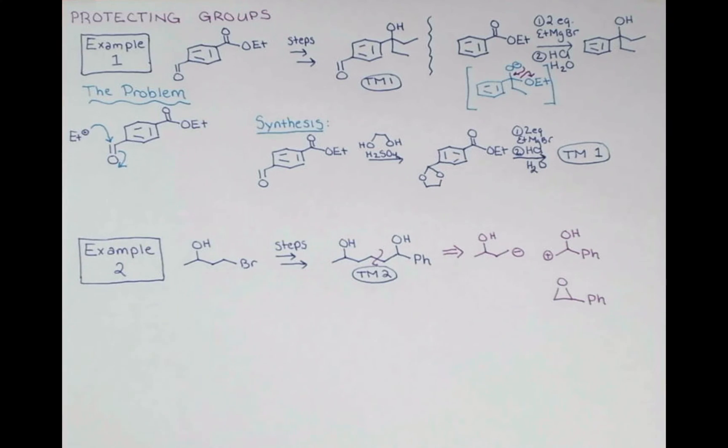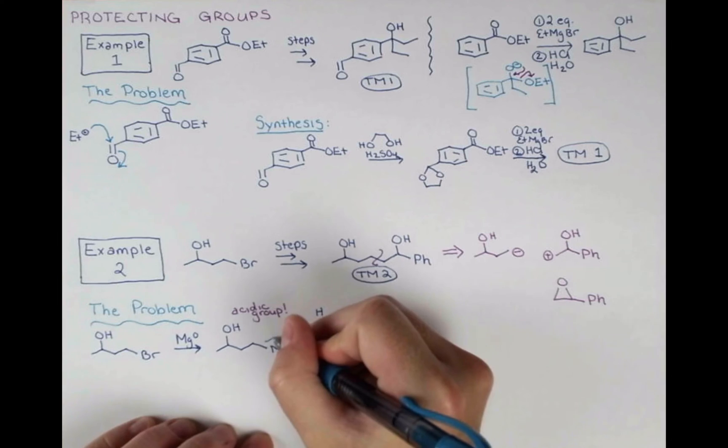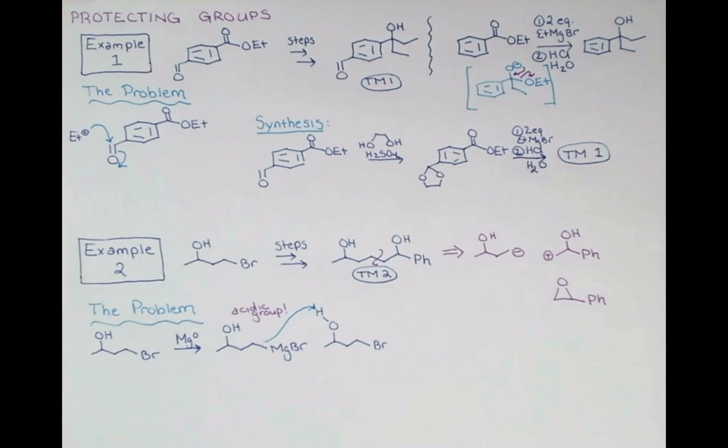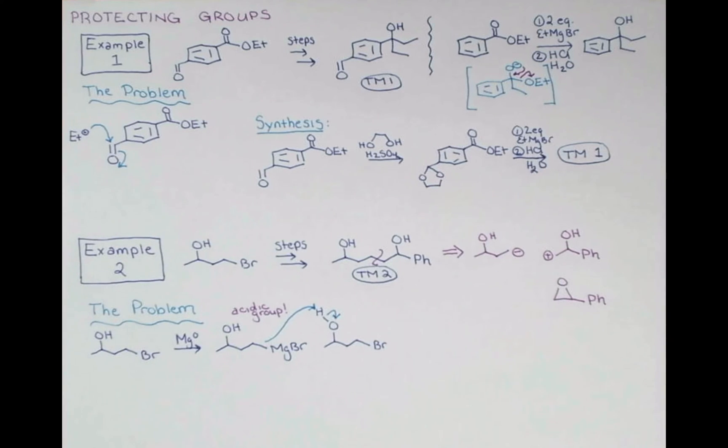So what's the problem here? Let's imagine we take this compound, treat it with magnesium metal, and make a Grignard. So we might imagine this Grignard starts to form, but this is actually a self-destructing Grignard. There's an acidic group right here. So before this Grignard could ever attack and open an epoxide forming a carbon-carbon bond, it will instead react with an unreacted molecule of starting material, deprotonating this alcohol here, and destroying the Grignard before it can even do its job.